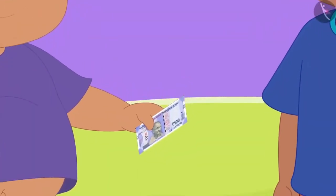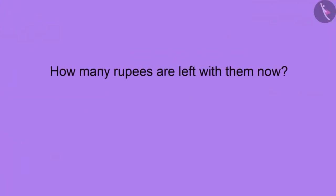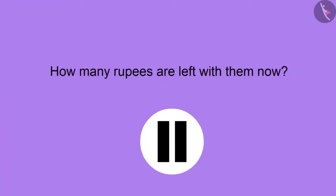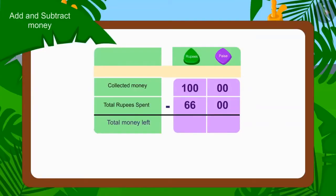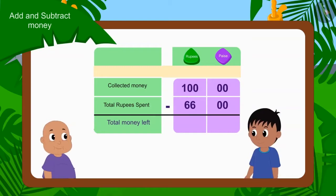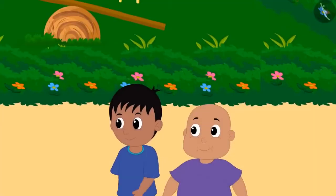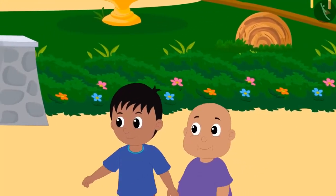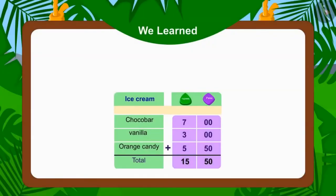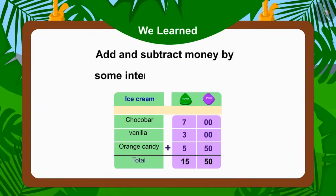Raju and Bablu had 100 rupees in the beginning. So can you tell how many rupees they have left now? If you want, you can pause the video and find the answer. Wow, kids — you found the right answer! Raju and Bablu now have 34 rupees left. We used subtraction to find this answer. Both of them were full and they went for a walk. In this video, we learned to add and subtract money with some interesting examples.